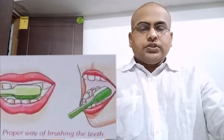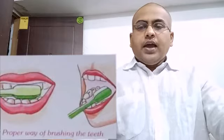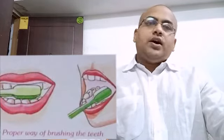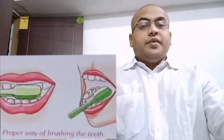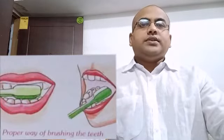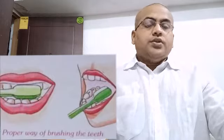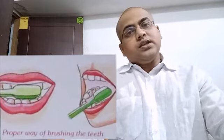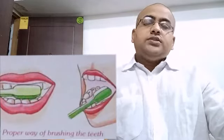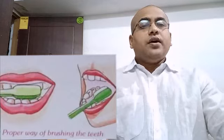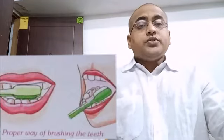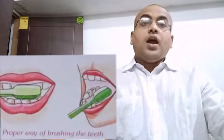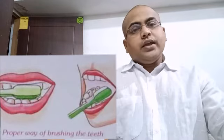Now we are moving to the last question, that is question number five: Name the hardest substance in our body. Enamel is the hardest substance in our body. It is the outermost covering of our teeth. But if you will not take care of your teeth, then something will happen.